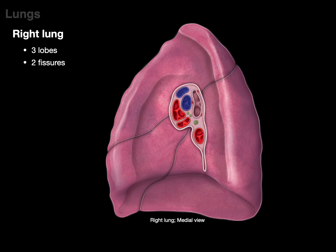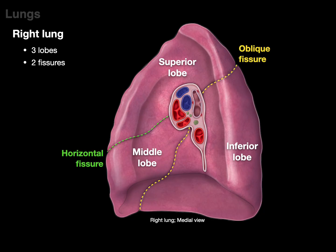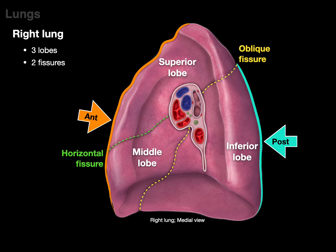Looking at a medial view of the right lung, there's the superior, middle, and inferior lobe. Notice the middle lobe is towards the front, but not the back, and the inferior lobe primarily forms the posterior surface. The anterior surface is primarily the superior and middle lobe, while the posterior surface is primarily the inferior lobe. That's why when you auscultate the superior and middle lobe, it's on the front of the chest wall, and the inferior lobe is auscultated on the posterior chest wall.